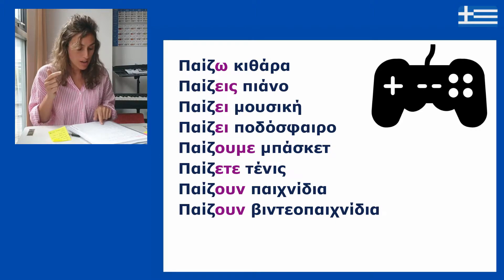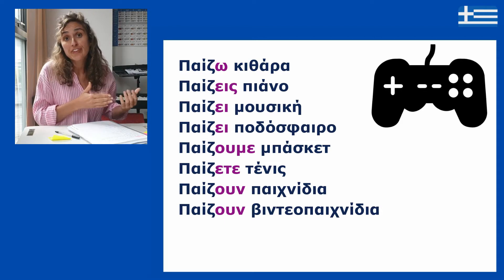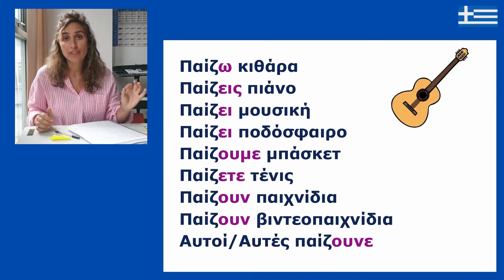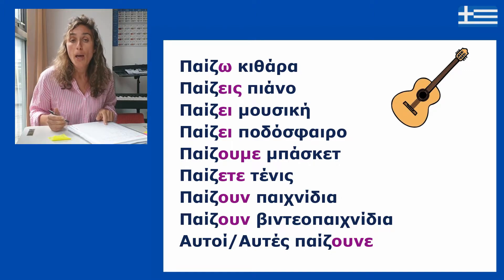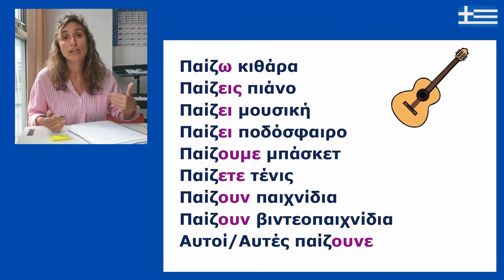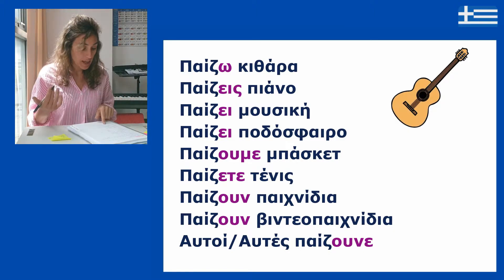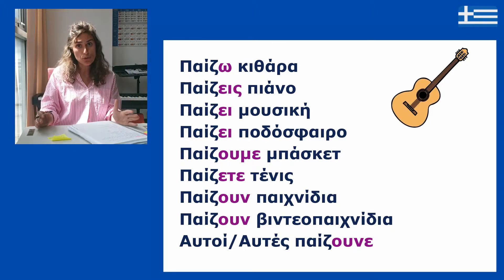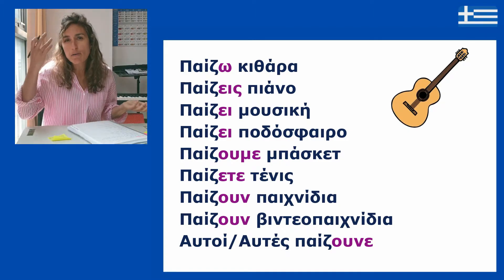Αυτές παίζουν βιδιοπαιχνίδια. For αυτές, the plural is βιδιοπαιχνίδια. You could also say παίζουνε — you can say παίζουν or παίζουνε. I prefer παίζουν; it seems easier to me. But it's up to you. I'm going to keep παίζουν because it's easier for me and I remember it better.